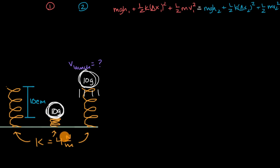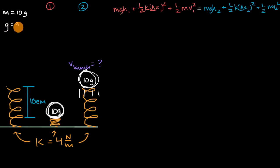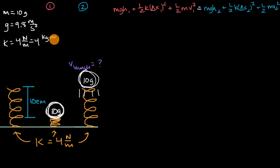Let's think about which variables we know. Mass is 10 grams, which we'll rewrite as 0.01 kilograms. The gravitational field strength — also the acceleration due to gravity near Earth's surface — is 9.8 meters per second squared. Our spring constant is four newtons per meter. Recall that a newton is a kilogram meter per second squared, so the spring constant is also four kilogram meters per second squared per meter. We want everything in kilograms and meters.